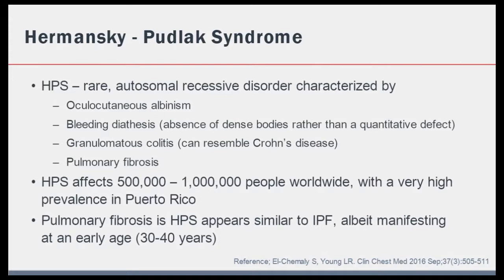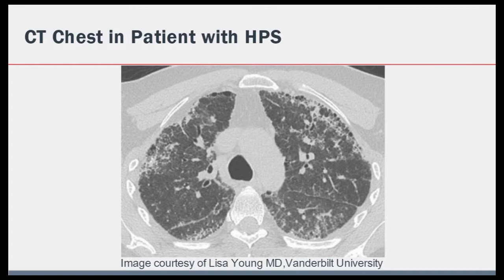Now let's talk about Hermansky-Pudlak syndrome or HPS. HPS is an autosomal recessive condition seen all over the world but has a very high prevalence in Puerto Rico. HPS is characterized by oculocutaneous albinism, bleeding diathesis, granulomatous colitis, and pulmonary fibrosis. The pulmonary fibrosis in HPS can resemble IPF, although a major clue is that the age of presentation in HPS is much younger than that of a typical IPF patient. Given that the patient in our case is 63 years old and lacks any of the other features of HPS, it is unlikely to be HPS.